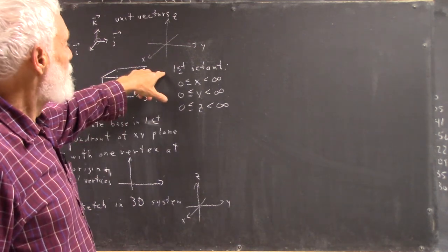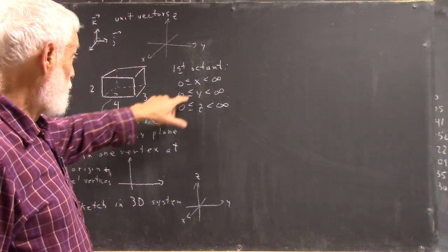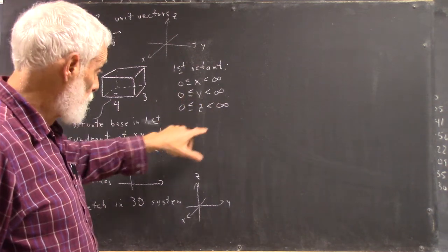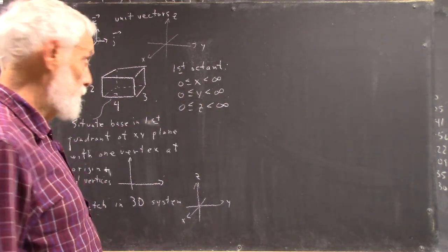What I'll say is first octant is described by these inequalities: x goes from zero to infinity, y from zero to infinity, z from zero to infinity.